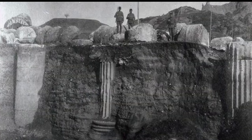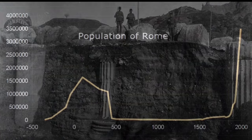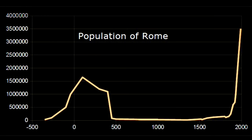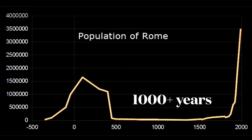Rome's population, they say, dropped from well over a million or 700,000 for a long time down to like 20,000 to 40,000. What would explain that? I think they're hiding something. I think there's definitely something else that went on.